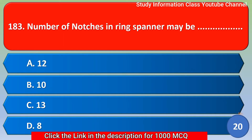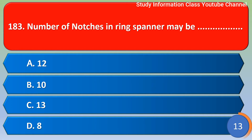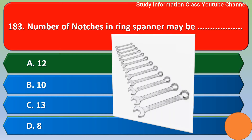Next question: the number of notches in a ring spanner may be option A 12, option B 10, option C 13, option D 8. The correct answer is option A: 12 notches in a ring spanner.